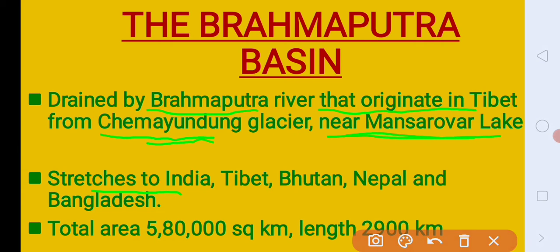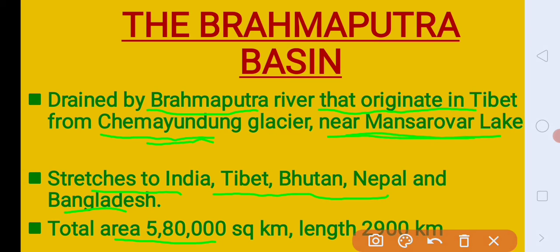It flows through Tibet, Bhutan, Nepal, and Bangladesh. In areas ko cover karti hai. Total area covered by Brahmaputra River is 5,80,000 square kilometer and total length is 2,900 kilometer.